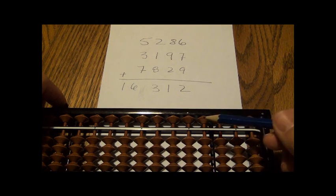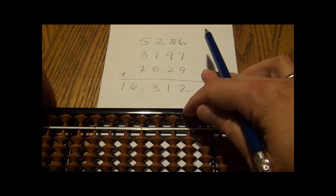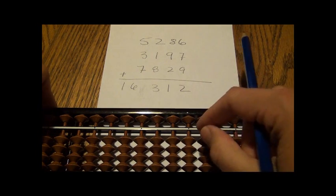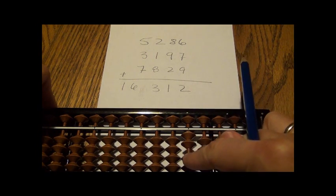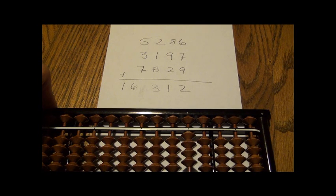Now how these beads work is each one of these upper beads, these heavenly beads, counts as five. Each one of these lower beads, these earth beads, counts as one.